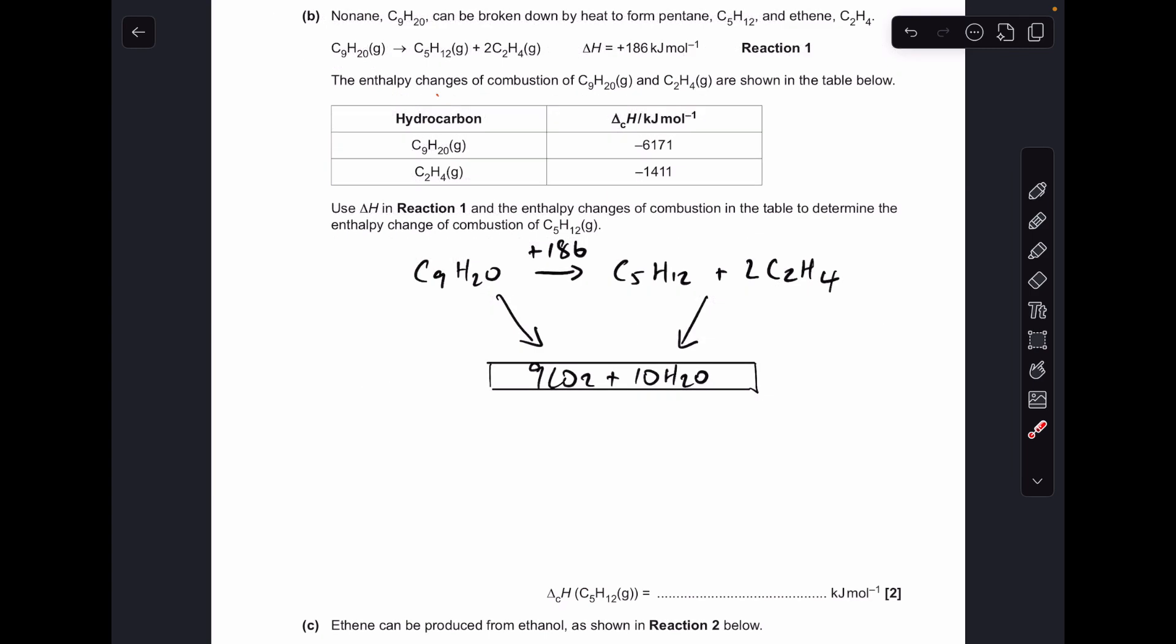So moving on to part B, I'm going to explain this one using the cycle, this Hess's law cycle. So there's reaction one, there's its enthalpy change. And because we've got combustion data in the table, I've created a combustion cycle.